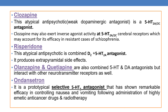The next drug is risperidone. This atypical antipsychotic is a combined D2 plus 5-HT2A antagonist. Its actions are similar to that of clozapine but additionally it produces extrapyramidal side effects. The next drugs are olanzapine and quetiapine. They are also combined 5-HT and dopaminergic antagonists but they interfere with other neurotransmitter receptors as well.